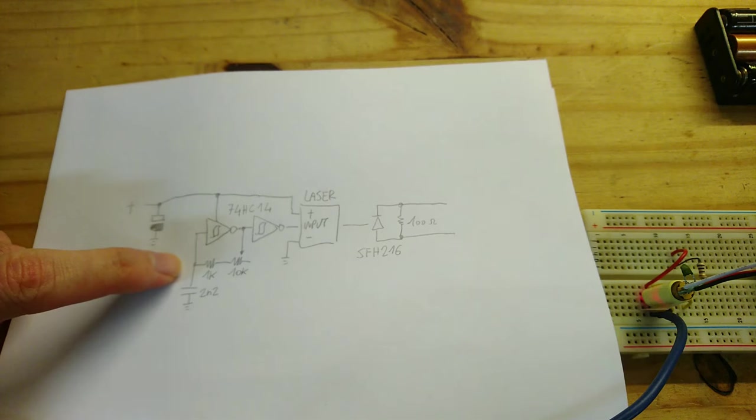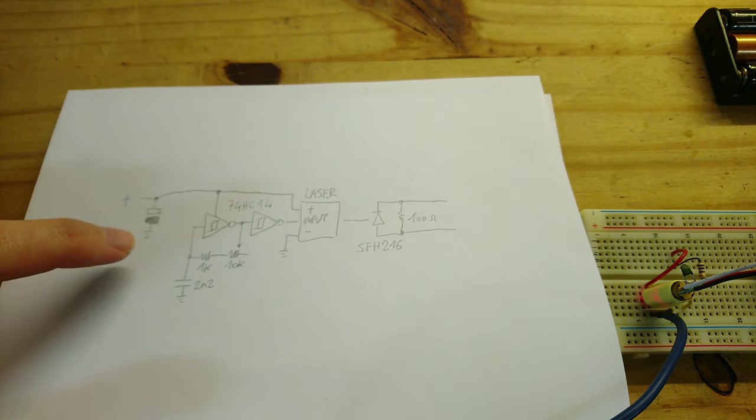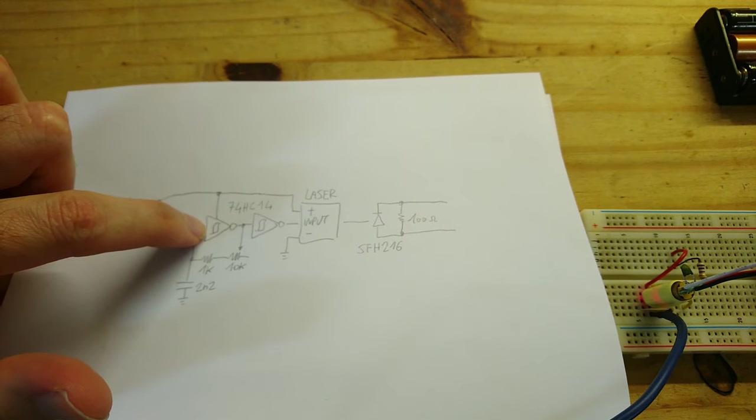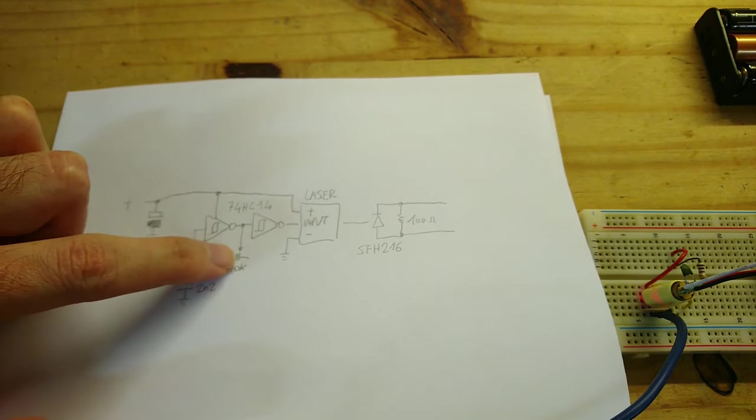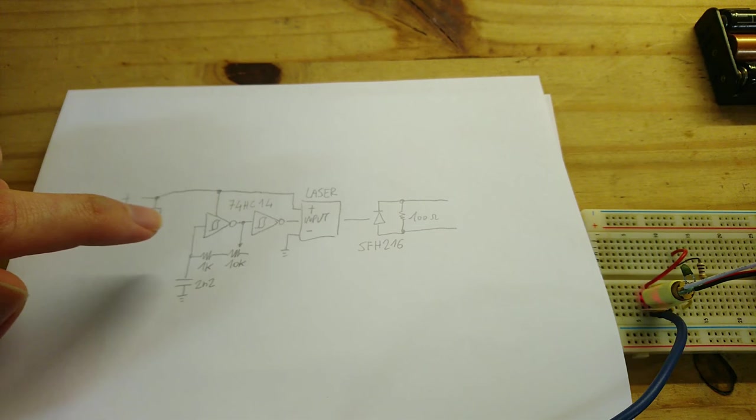This is the circuit that I built on the breadboard when we started the video. It's an oscillator with just a Schmitt-Trigger inverter that I can change the frequency with this 10k potentiometer from around 60 to around 400 kHz, sort of.